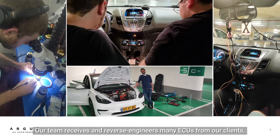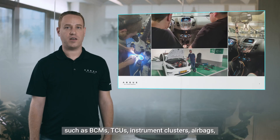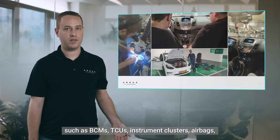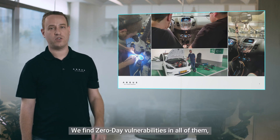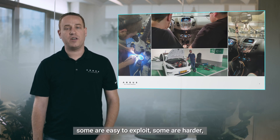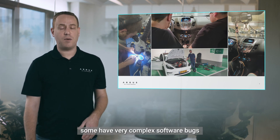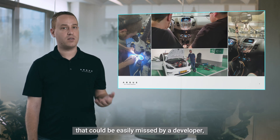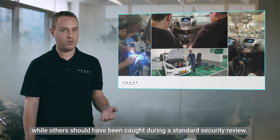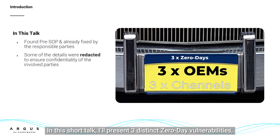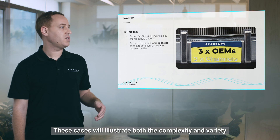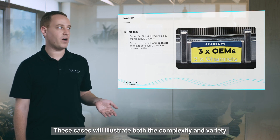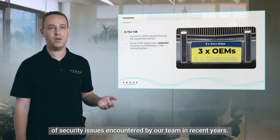Our team receives and reverse engineers many ECUs from our clients, such as BCM, TCUs, instrument clusters, airbags, and other safety critical systems. We find zero-day vulnerabilities in all of them — some are easy to exploit, some are harder. Some have very complex software bugs that could be easily missed by a developer, while others should have been caught during a standard security review. In this short talk, I'll present three distinct zero-day vulnerabilities found in three different OEMs using three diverse communication methods. These cases will illustrate both the complexity and variety of security issues encountered by our team in recent years.